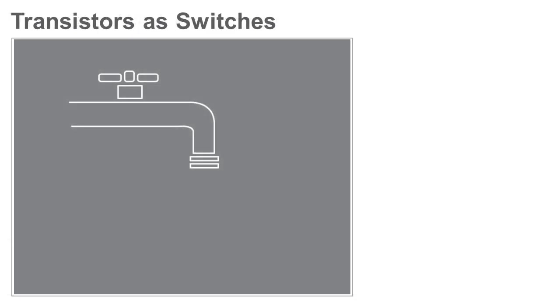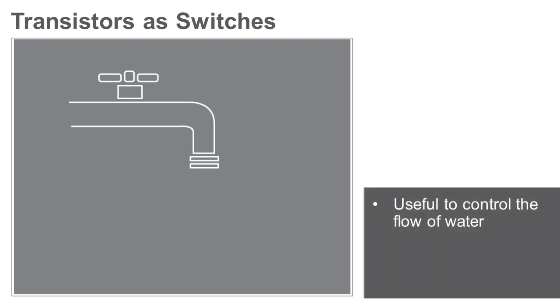Think back to your kitchen tap. If the options were limited to water is flowing or water is not flowing, the tap wouldn't be as useful to you. You want to be able to adjust the amount of water that comes out of the tap. The same thing is true of circuits.